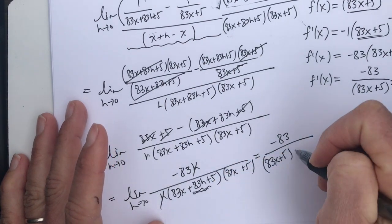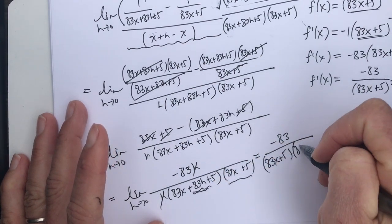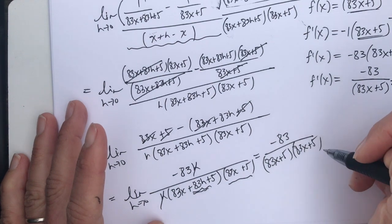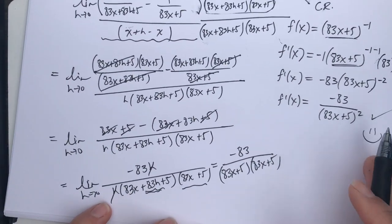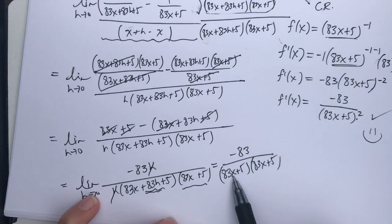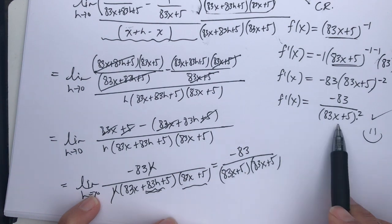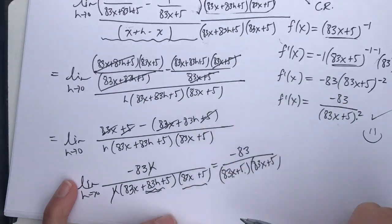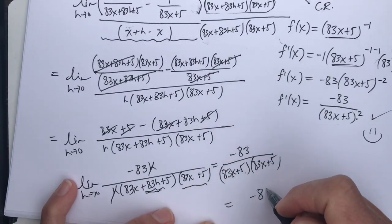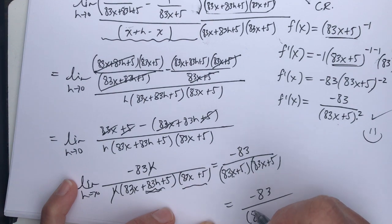And here's where we get really excited, because what are we left with? 83x plus 5 times 83x plus 5. There's your 83x plus 5 squared. I wasn't making this up. You just saw the algebra. This is crazy. The derivative is negative 83 over 83x plus 5 squared.